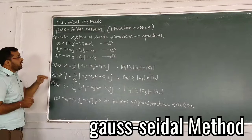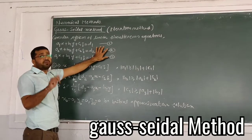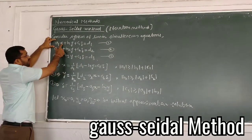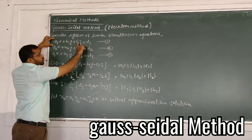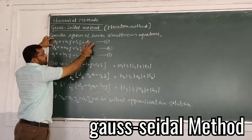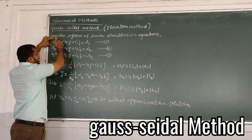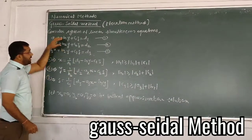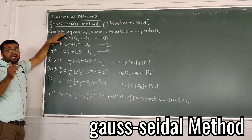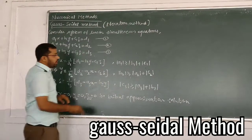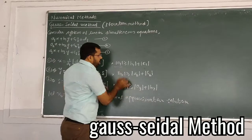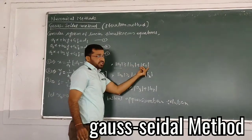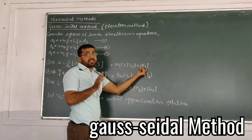In the Gauss-Seidel method, we use the first equation to get the value of x. We rearrange by moving the other terms to the right-hand side and dividing by the coefficient a1. However, there is a condition: the modulus of a1 must be greater than or equal to the sum of the moduli of b1 and c1.